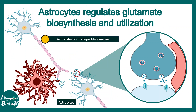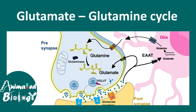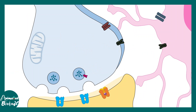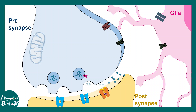One of the things that astrocytes regulate in the tripartite synapse is the utilization and biosynthesis of a neurotransmitter known as glutamate. Let us look at how astrocytes can modulate the glutamate-glutamine cycle in the tripartite synapse. Imagine this is a glutamatergic synapse — this is the pre-synapse, this is the post-synapse, and here in the pink is the astrocyte.